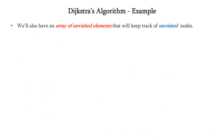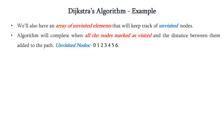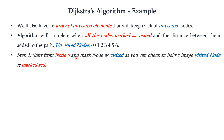We also maintain an array of unvisited elements to keep track of unvisited nodes. The algorithm completes when all nodes have been marked as visited and their distances have been finalized. Initially, we have no visited nodes, so all nodes 0 to 6 are placed in the unvisited set.